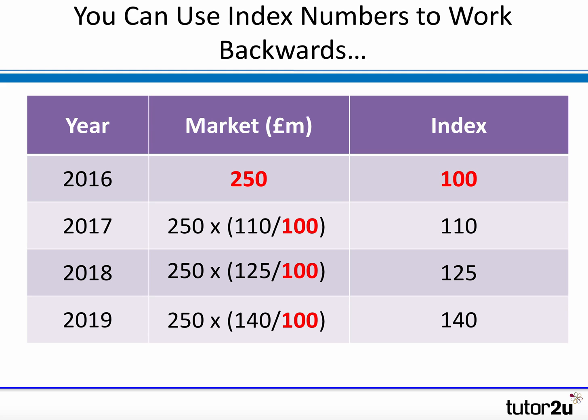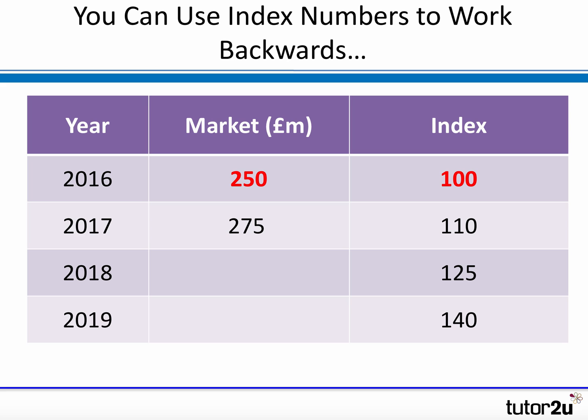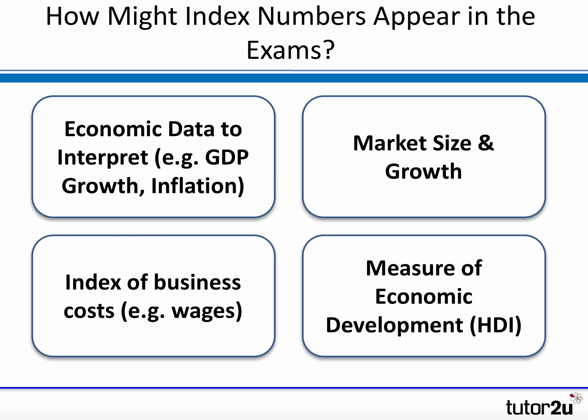Let's look at what the market values would be. For 2017, it's 275 — 10% higher than 2016. For 2018, it's 312.5 million. And for 2019, the index is 140 divided by the base — that's a 40% increase on 2016 — so it's 350 million pounds. You can see that sometimes you might be given the index number and have to work backwards to calculate the underlying data. So practice those calculations and practice understanding how to calculate an index.